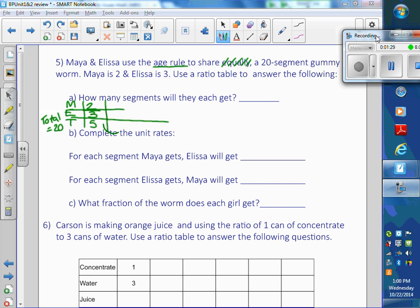We have to get the bottom, the total, to equal 20. So I have to multiply this by 4. So this is 20, which would make this 3 times 4 be 12, and 2 times 4 be 8. So the word 'equally' shouldn't have been there because the age rule doesn't share equally. That was a typo.